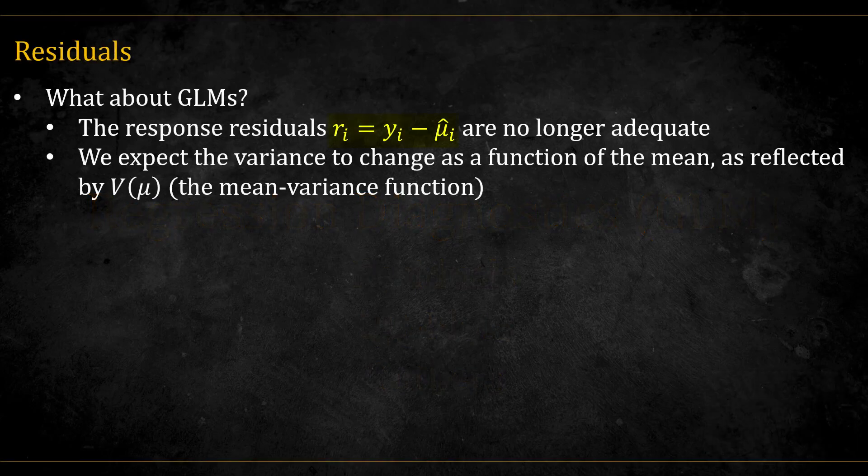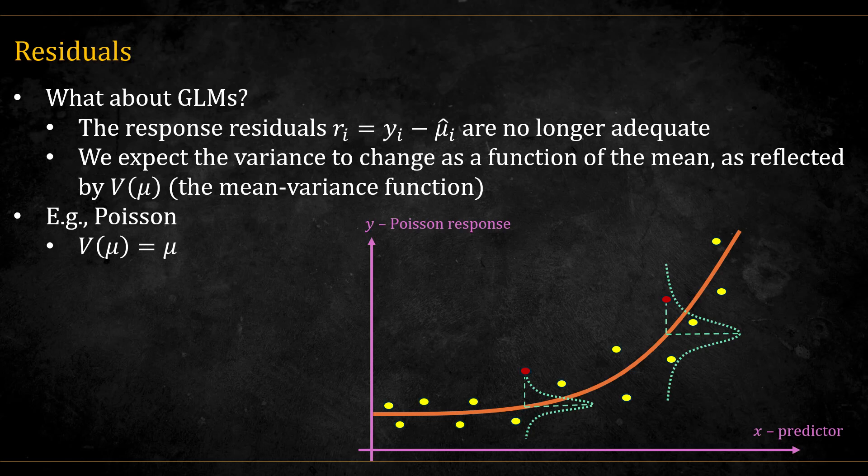The response residuals we used in linear models and all its variants are no longer suitable when we are using GLMs. The main reason is that in GLMs the variance changes as a function of the mean. This is captured by the mean variance function V. For example, for a Poisson regression, we have that V is equal to mu, so we expect the variance to grow as the mean grows. That means two observations having the same raw residuals might have a completely different interpretation.